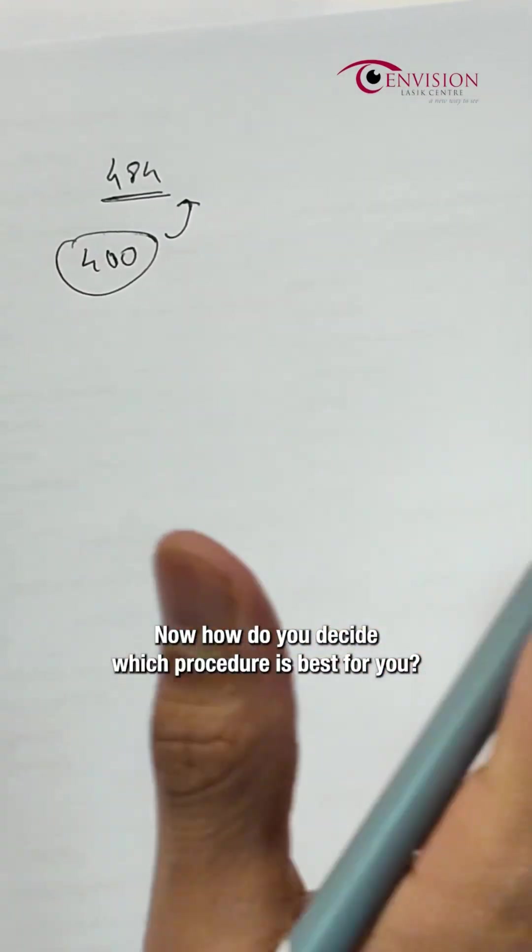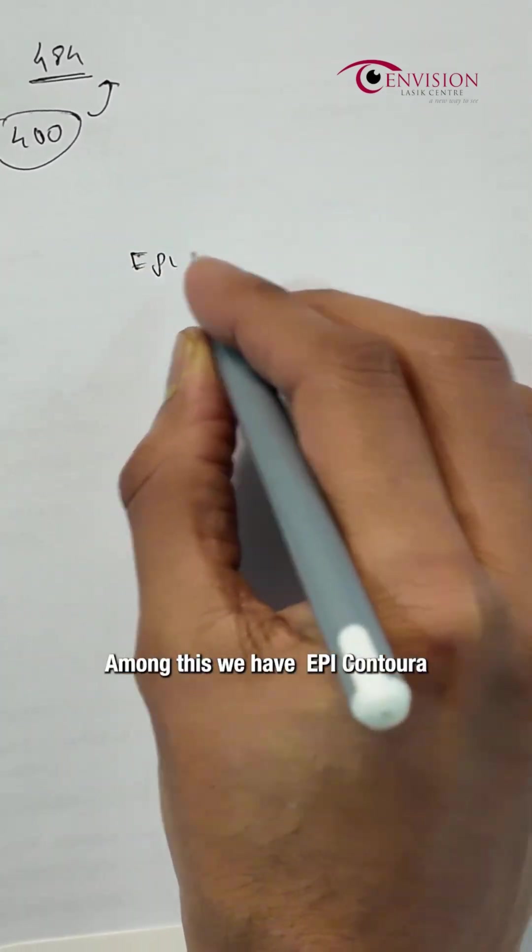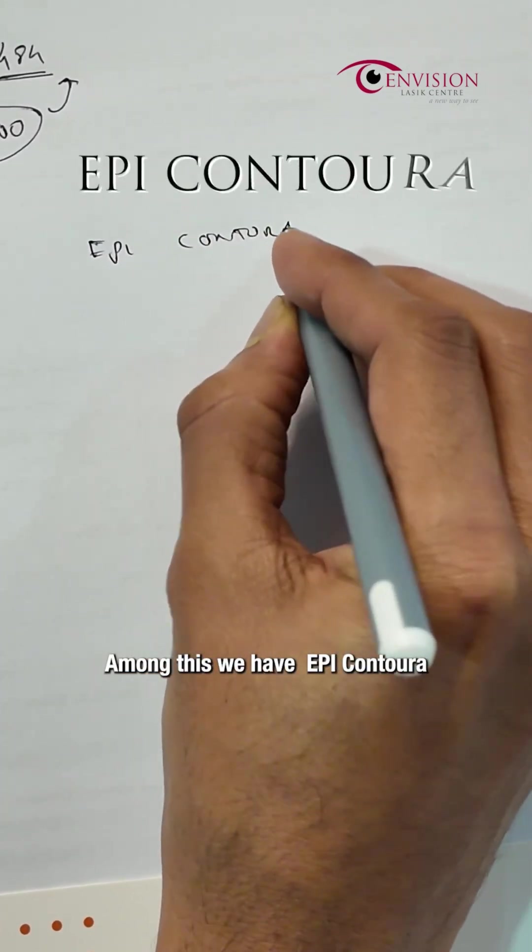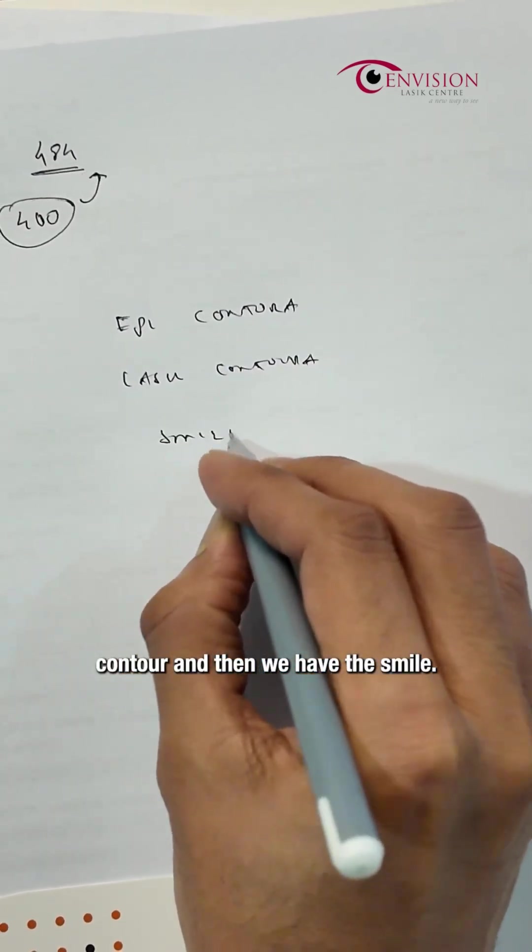All right, now how do you decide which procedure is best for you? There are three different types of procedures: we have the epicontura, then we have the LASIK contura, and then we have the SMILE. The most important factor in this is the recovery period.